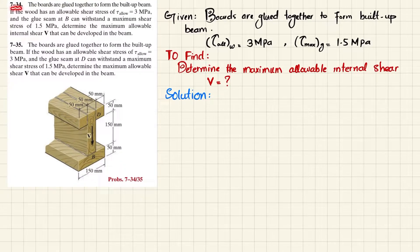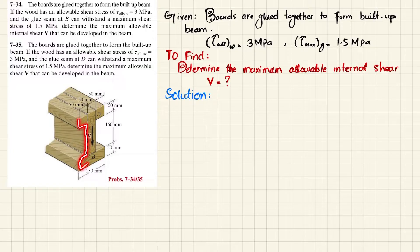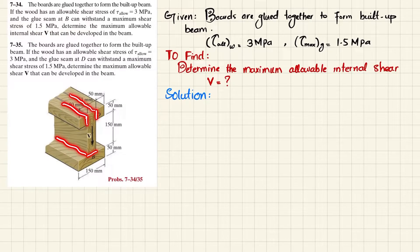Welcome back. Problem 7-34: the boards are glued together to form a built-up beam. If wood has allowable shear stress of 3 megapascal and the glue seam at B can withstand a maximum shear of 1.5 megapascal, determine the maximum allowable internal shear V that can be developed in the beam. This I-shaped beam is composed of four wood pieces glued together.